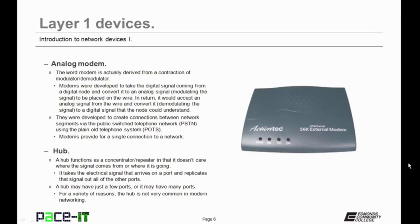Modems were developed to create a connection between network segments via the public switched telephone network, using the plain old telephone system. Modems provide for a single connection to a network, and they're only concerned about the wire. The wire resides on the physical layer, Layer 1 of the OSI model. It doesn't care where the signal comes from — it just does its job.